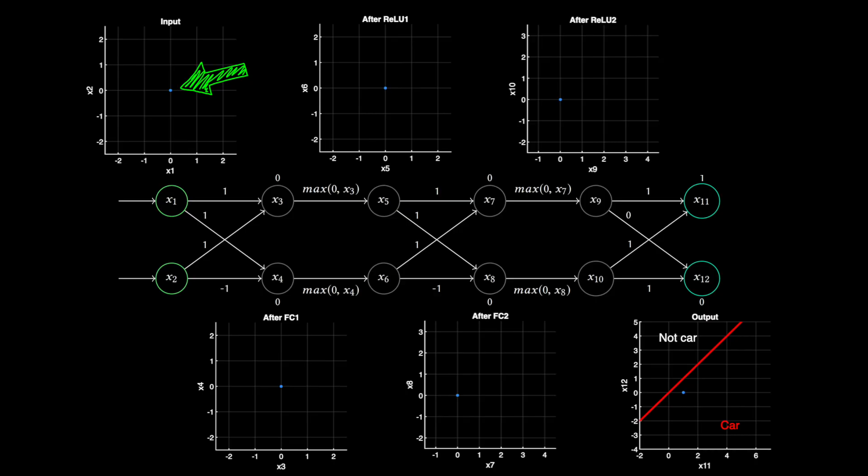Now the question becomes, will the network still return the car label if we allow both x1 and x2 to vary between minus one and one? That is, for every possible input within this white square, will the network still return values that exist on the right side of this red line?